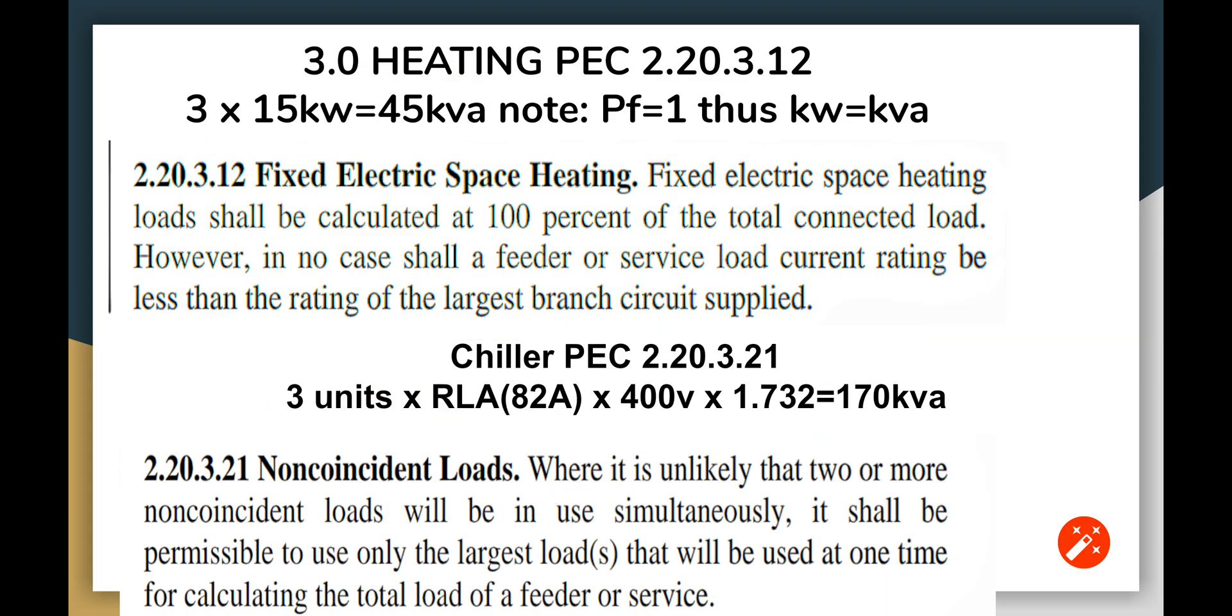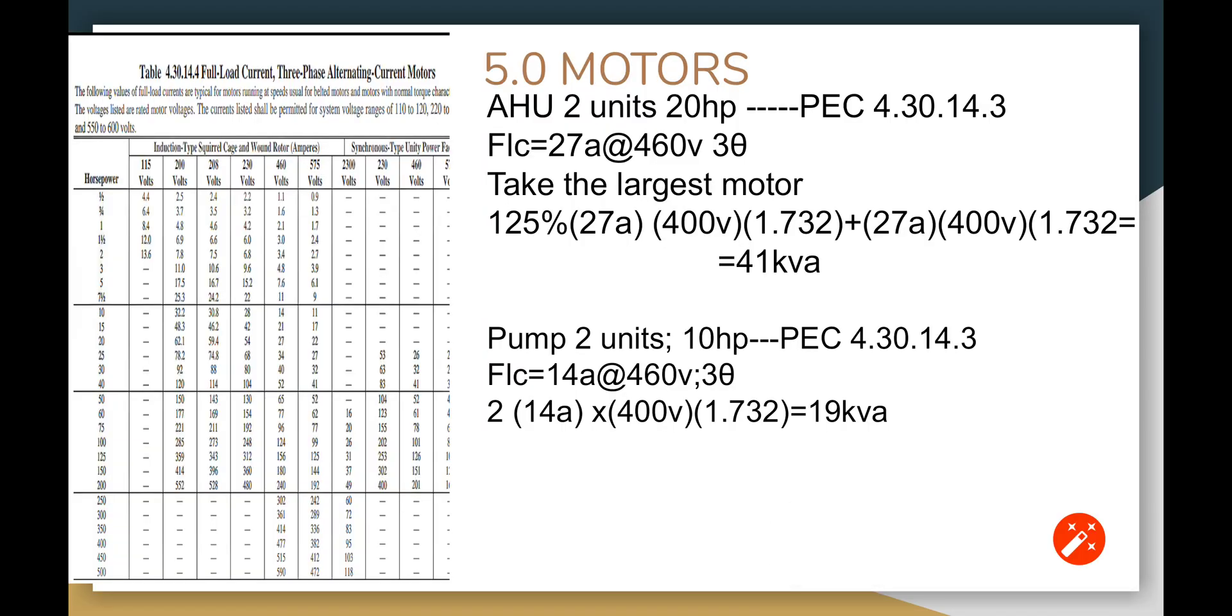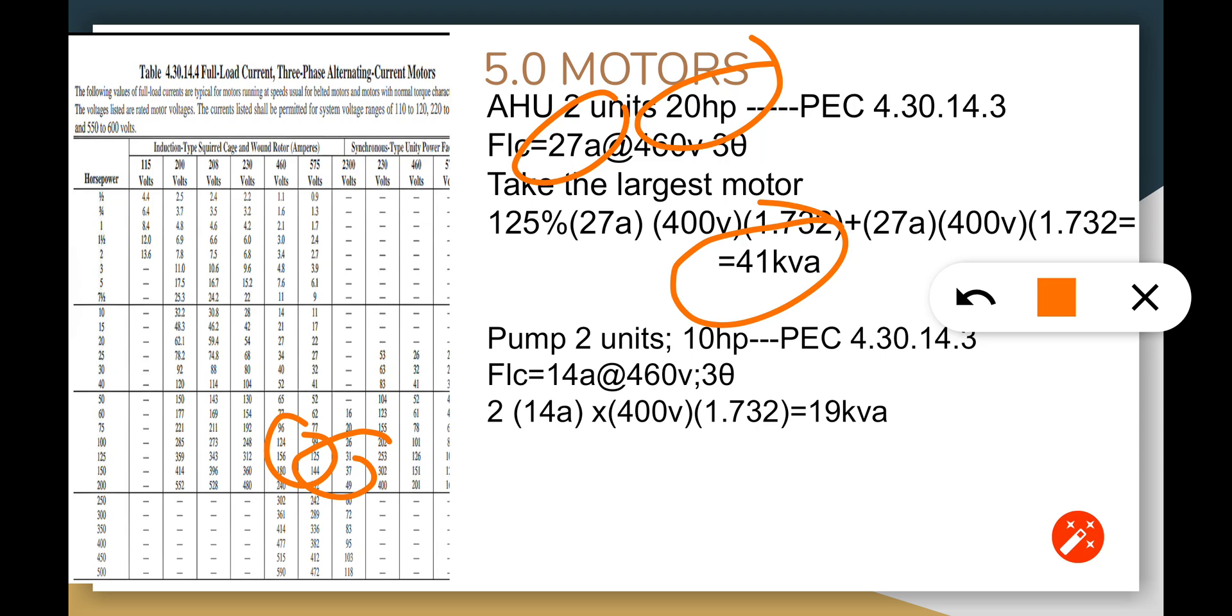We have four motors. We have four units of 20 HP, the FLC is 27 based on PEC 4.30.14.3. The largest of the motor, we have four motors here, the largest one plus 25 percent gives us 41 kVA. So you don't need to add another 25 percent for the pump because it's already counted here in this calculation. For the pumps, two pumps, these are not non-coincidental loads, so they are all used in our calculation for motors.